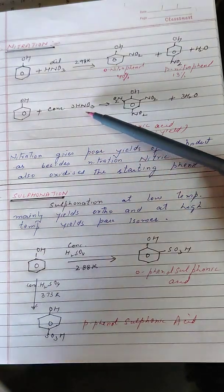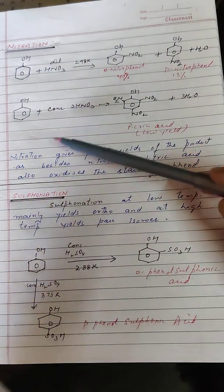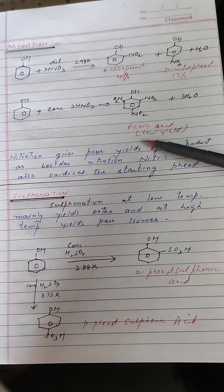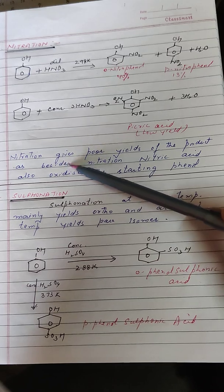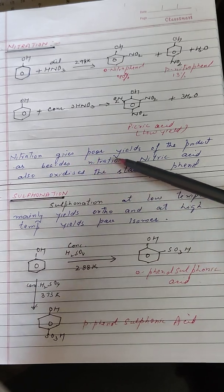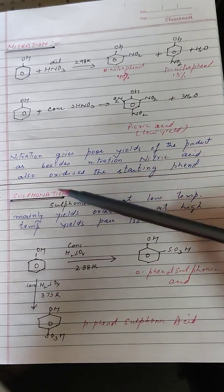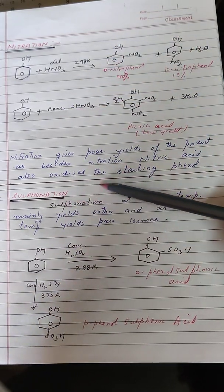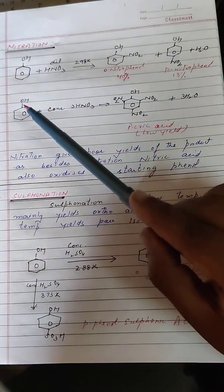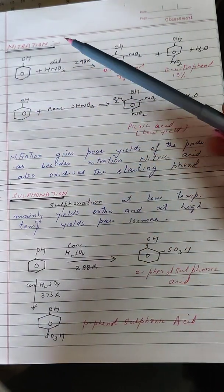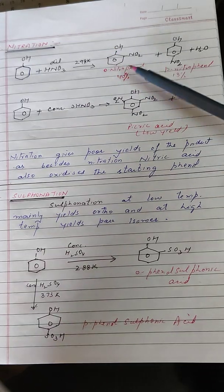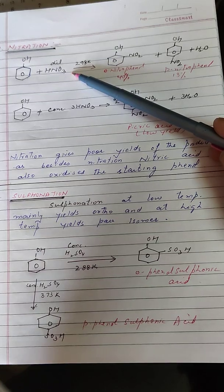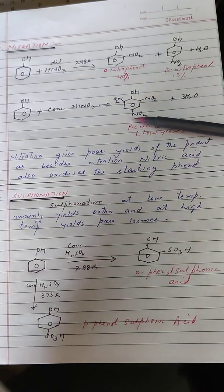Even when treated with concentrated nitric acid, phenols give 2,4,6-trinitrophenol — that is picric acid — in low yield. This nitration gives poor yield because, besides nitration, nitric acid also oxidizes the starting compound, so some of the starting phenol gets oxidized whether we are using dilute or concentrated nitric acid.